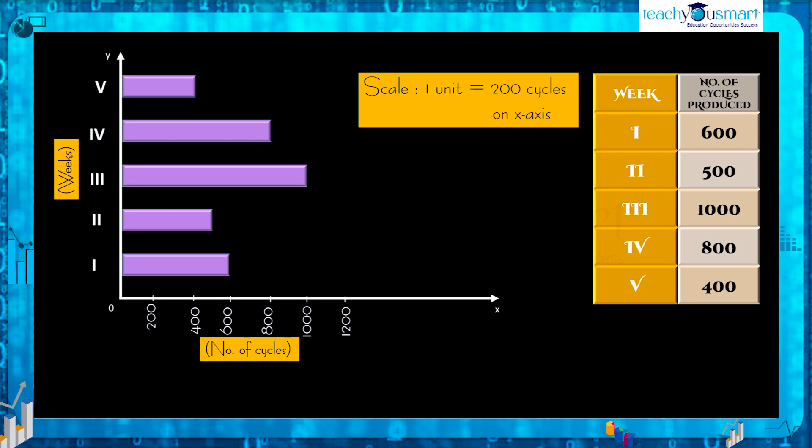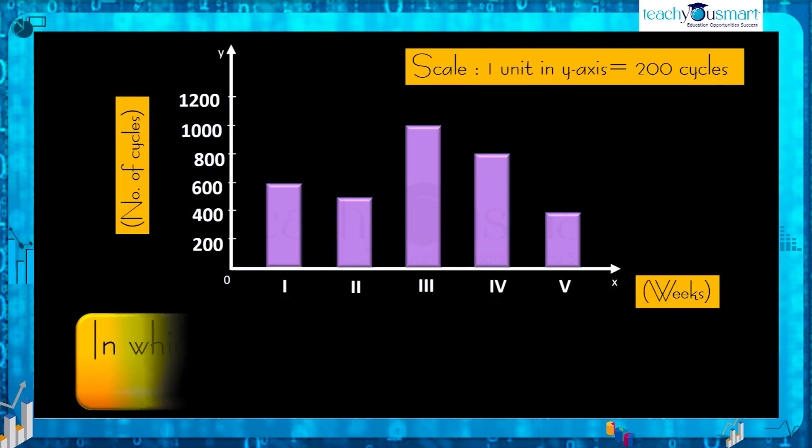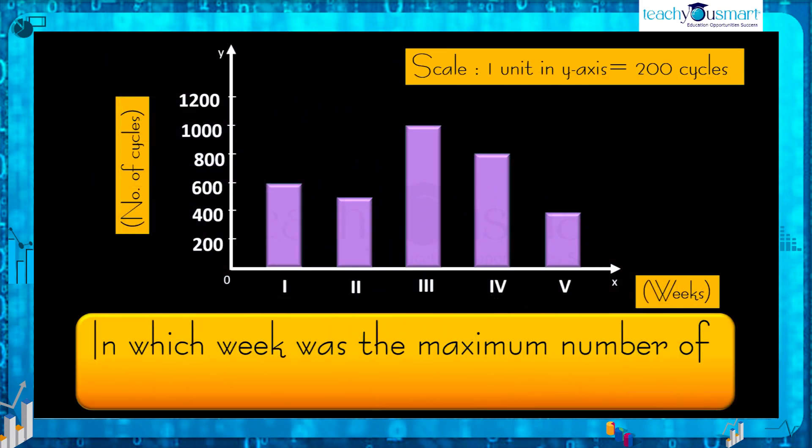Now observe the given graph. Can you answer the following questions? In which week was the maximum number of cycles produced? The answer is third week.